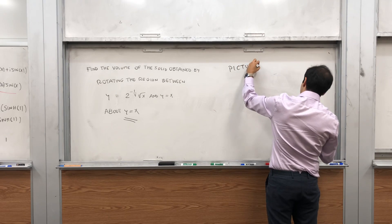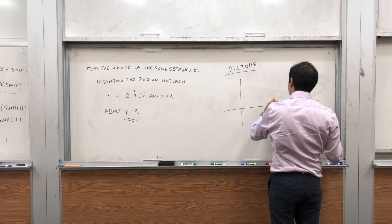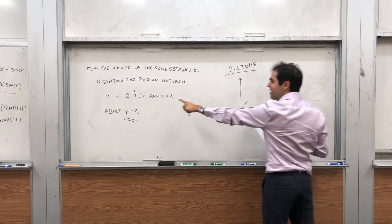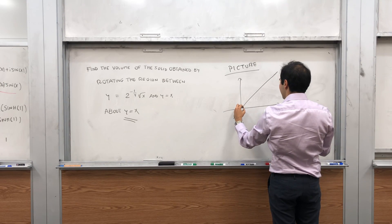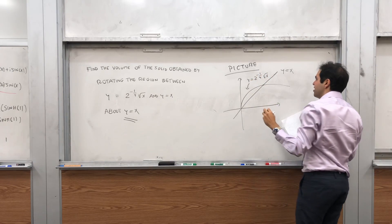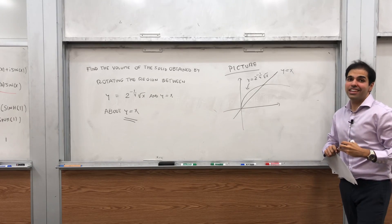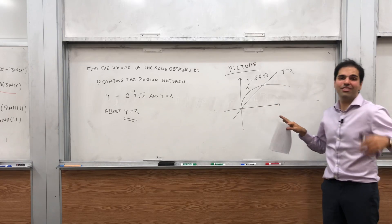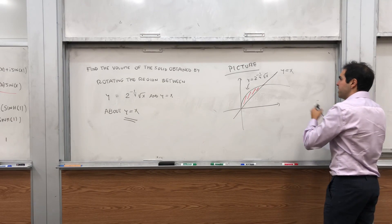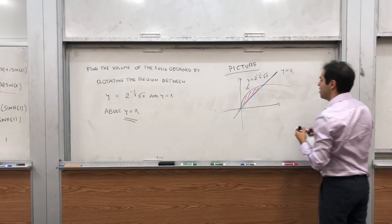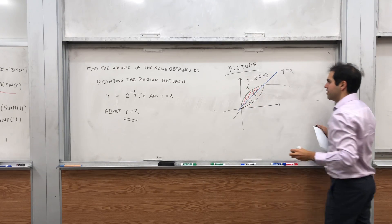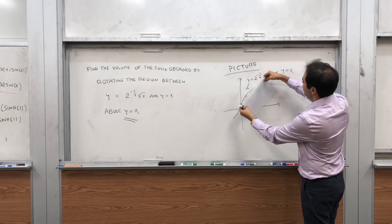Let me draw a little picture of what I mean. We have the line y equals x, and we have this function which is basically square root, except with another factor — that's y equals 2 to the minus one-fourth square root of x. So we have this little region here, and when you rotate it about this axis, you get a nice butterfly or almond-shaped region.